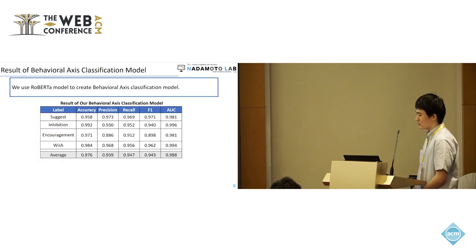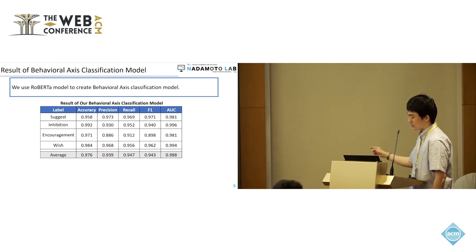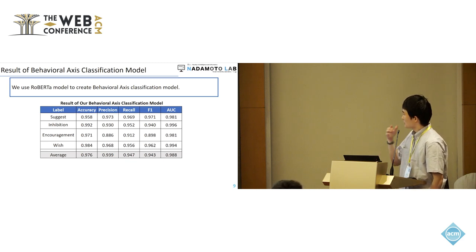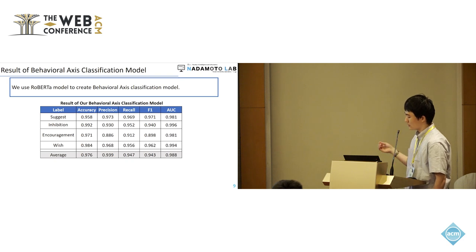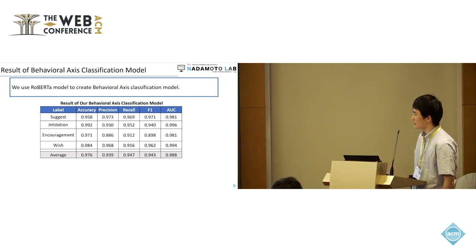We use the RoBERTa model to create a BF behavior axis classification model. Please look at the table — this table shows the result of our BF axis classification model. As a result, our classification model is effective for classifying the BF axis.